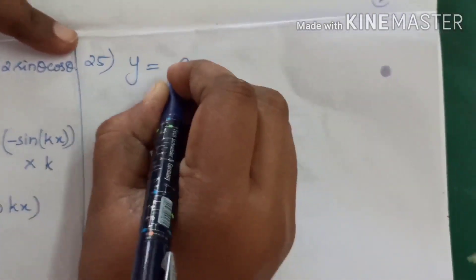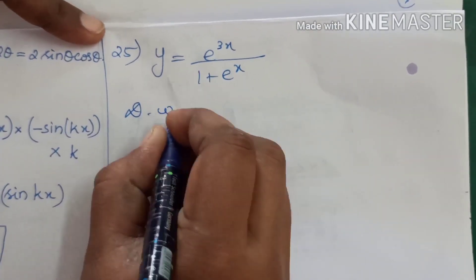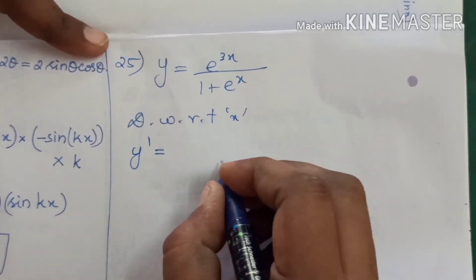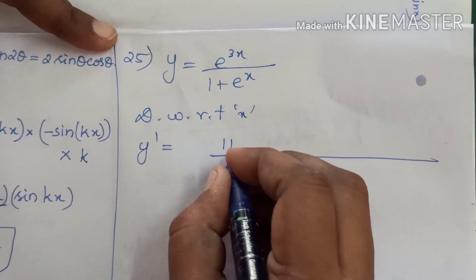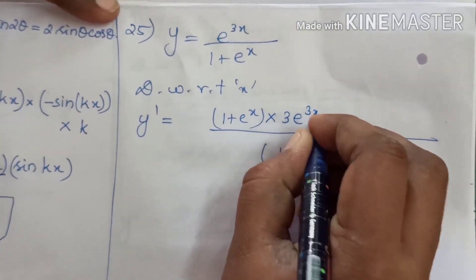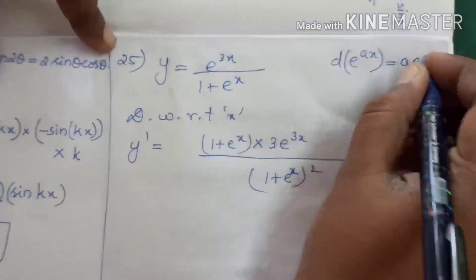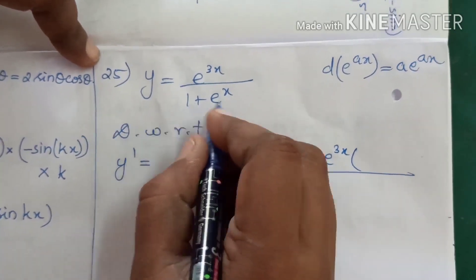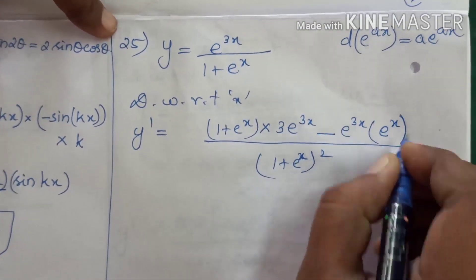Now for the 25th sum: y is equal to e^(3x) divided by (1 + e^x). Differentiating with respect to x using the quotient rule (u/v formula): denominator is (1 + e^x) squared. The numerator becomes (1 + e^x) times 3e^(3x) minus e^(3x) times the differentiation of e^x, which is e^x.